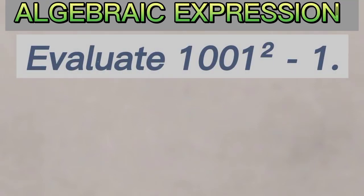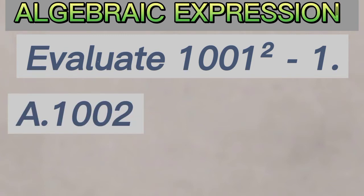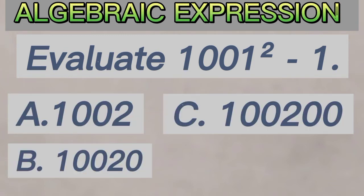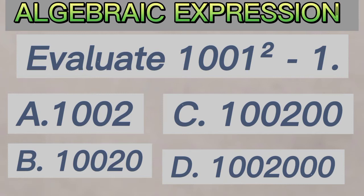Evaluate 1001 squared minus 1. We are given options A, B, C, and D. Which of these do you think is correct? Let's all solve together, after which we indicate the correct answer.